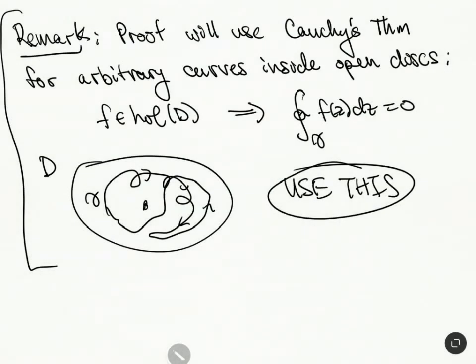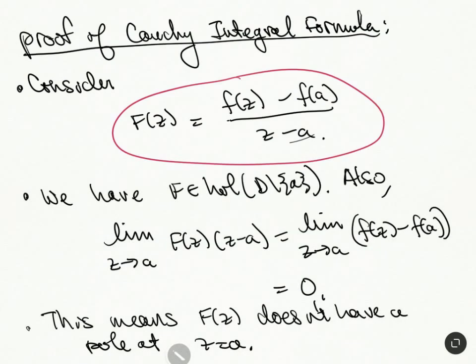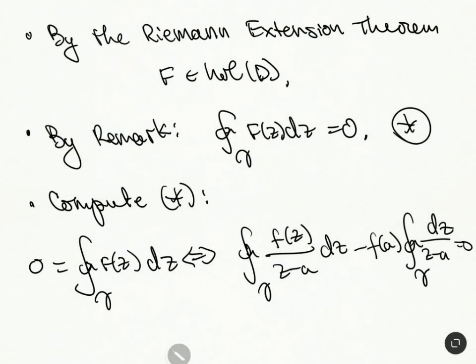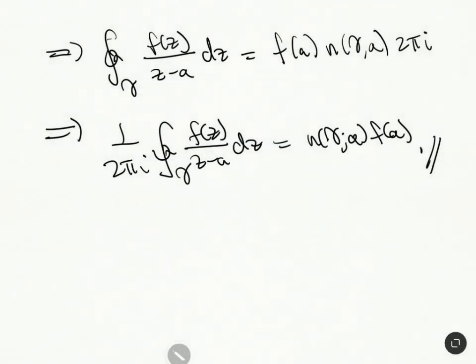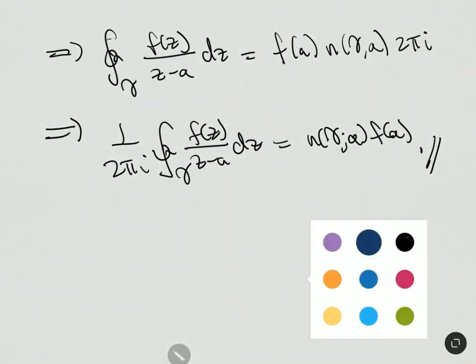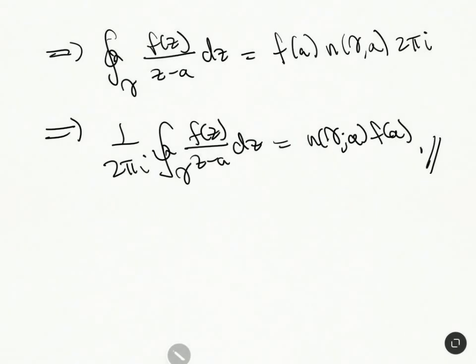We've established this general version of the Cauchy integral formula here from assuming that we have this Cauchy theorem for curves, right, for arbitrary curves inside the disk. And we'll come back to that. But it doesn't really tell us, it tells us that this thing works. It doesn't really tell us too much about the nature of this thing. I want to talk more about what the winding number does. Before that, I would like to do some applications.